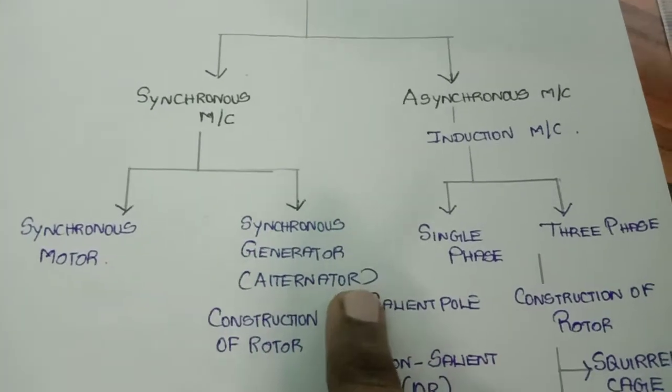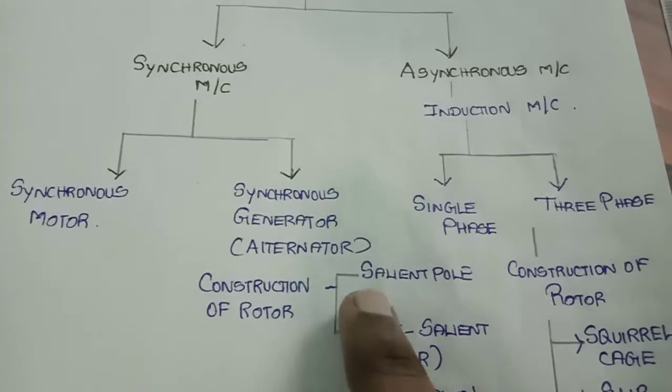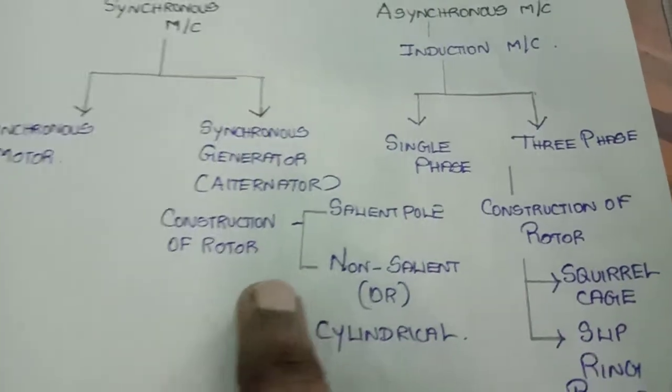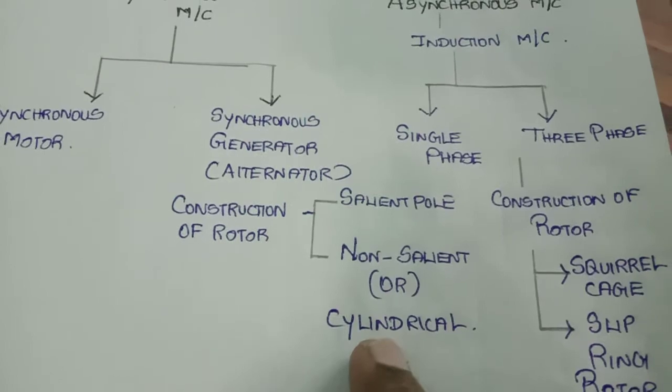Based on the construction of the rotor, the rotating part, we can say salient pole rotor for low-speed application, and non-salient pole or cylindrical rotor for high-speed application.